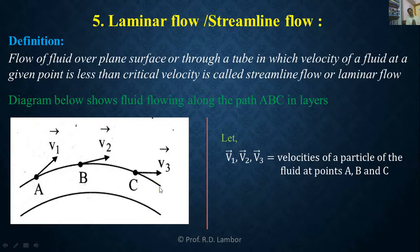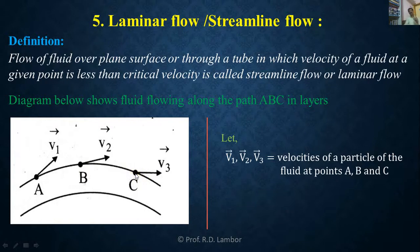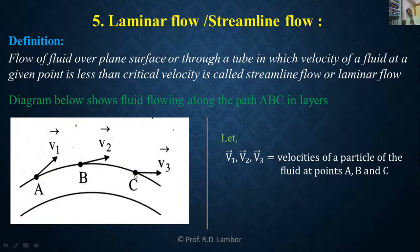In this way, the velocity of each particle arriving at point A is the same. Velocity of each particle arriving at point B is the same. Velocity of each particle arriving at point C is the same. But velocity at A and B may or may not be the same, and similarly for B and C, or A and C.